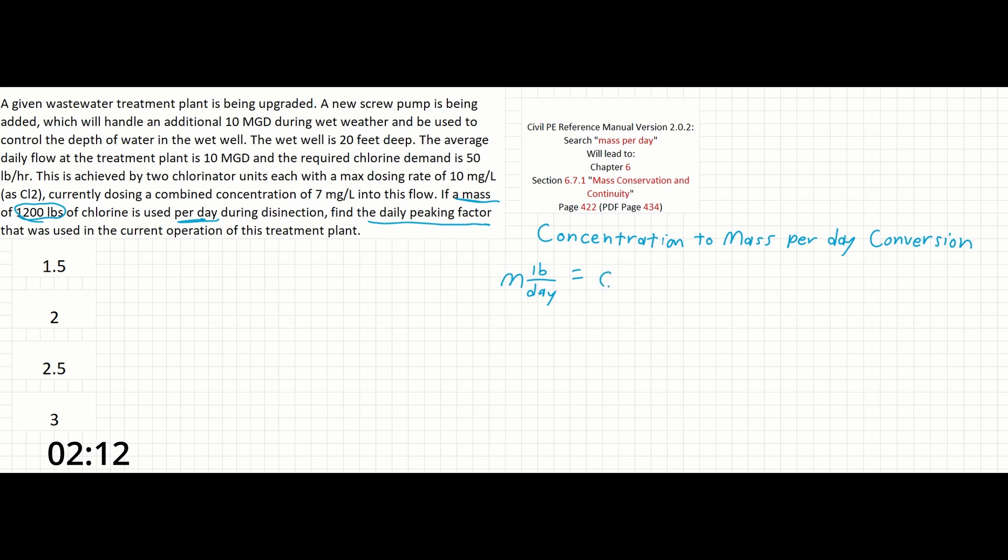Equals a concentration C in units of milligrams per liter times Q, which is our flow in units of MGD, times our conversion of 8.34. And the units for this is going to be pounds per million gallons over milligrams per liter.